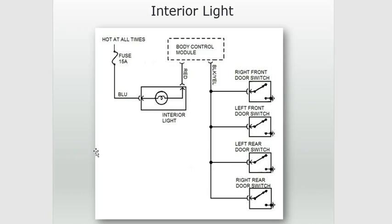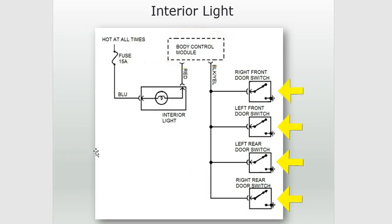Let's take a look at this interior light circuit. This body control module will turn on the interior light when one of these door switches is closed. When a door switch closes, the output signal is energized — so we have some kind of a driver here. Is it a high side or a low side driver? We decide by looking at the other side of the light bulb. Since it already has 12 volts there, we know this output is going to be a ground — so it's a low side driver.